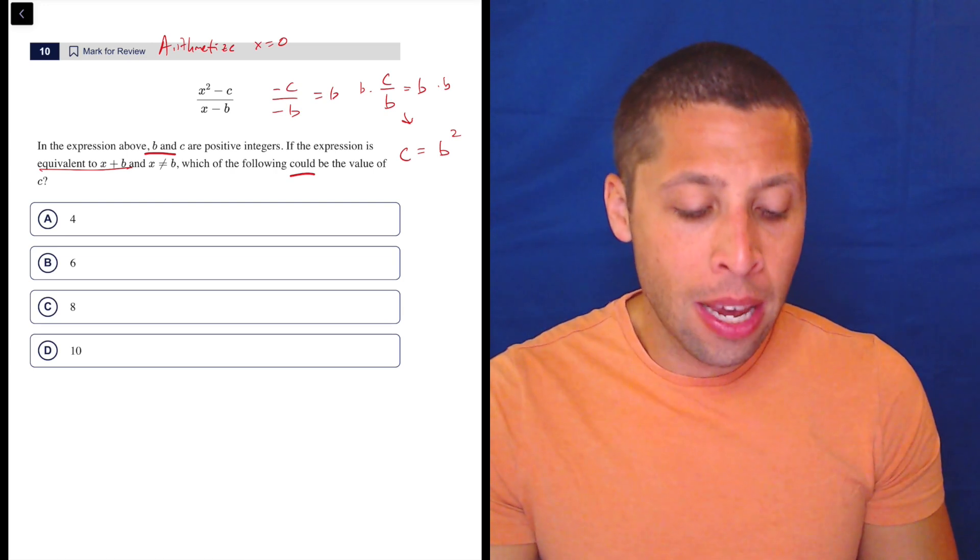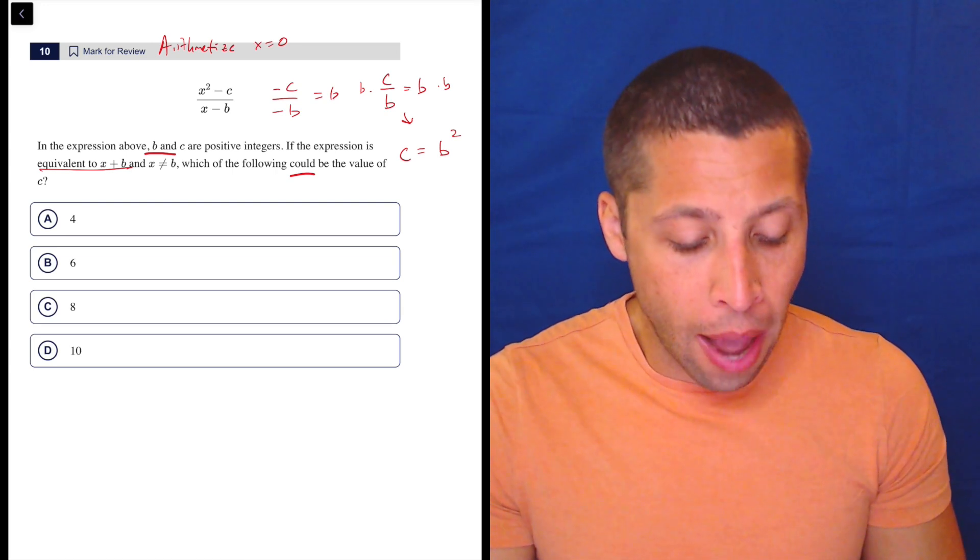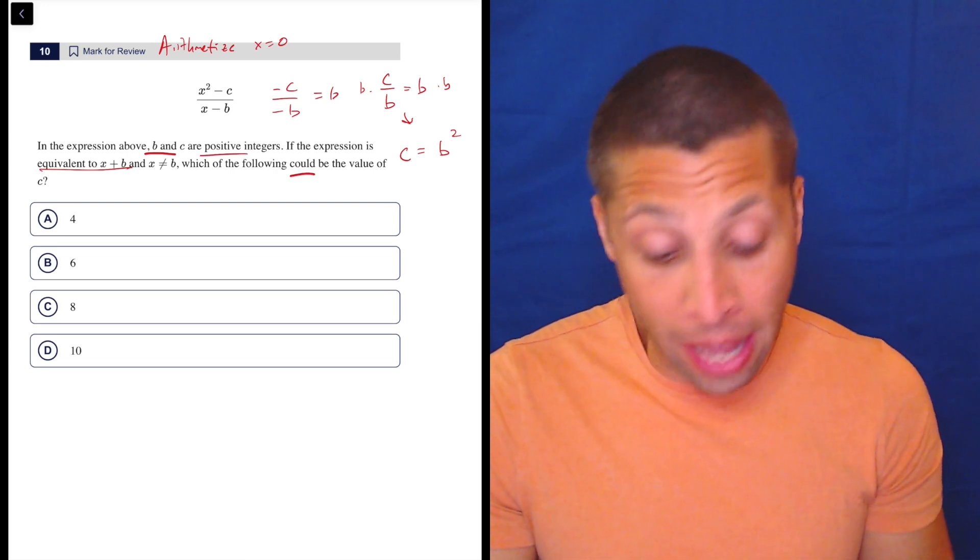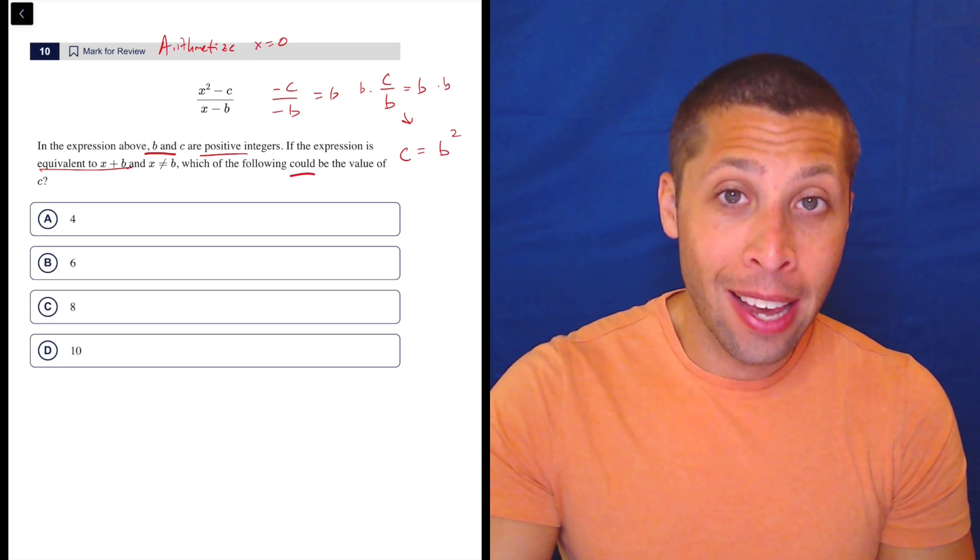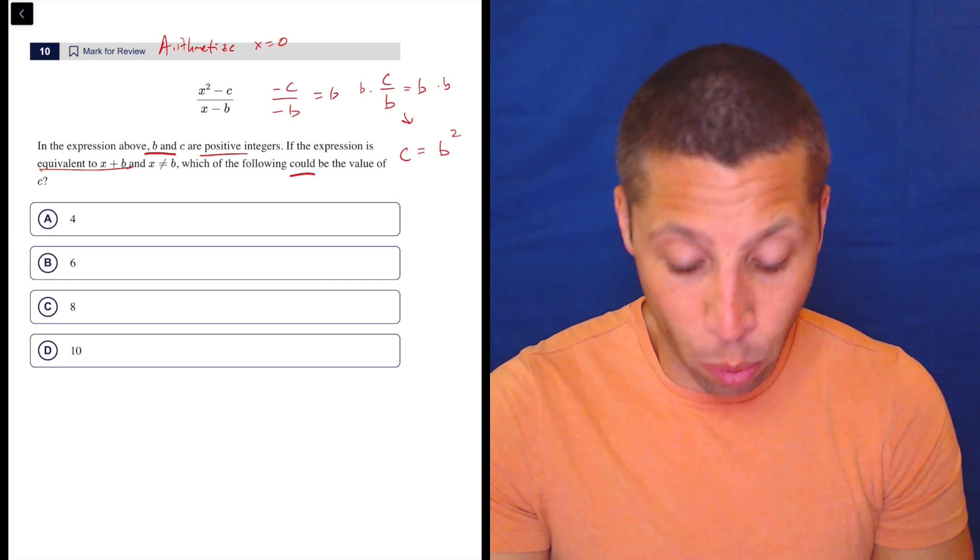C has to be a perfect square. And the reason is that B and C both have to be positive integers. So we have to think what B could be. Whatever it is, it's got to be a number that's squared.